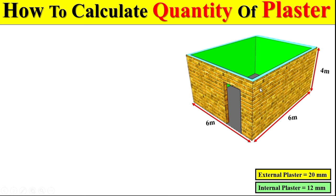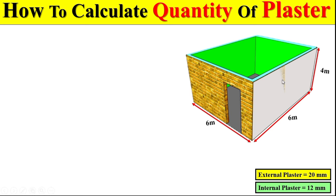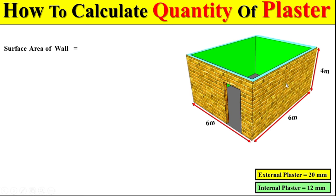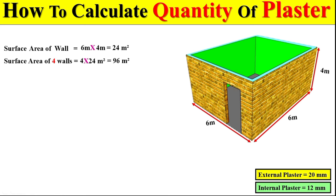If we are interested to calculate the total quantity of external plaster, first we calculate the total external surface area of this room, then multiply it by the external plaster thickness. For the external surface area, we multiply the total length of one wall by the total height of the wall to get the surface area of one wall. Since the total number of walls is 4, we multiply this area by 4 to get the total external surface area.